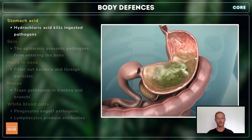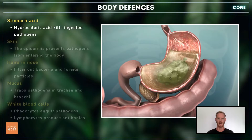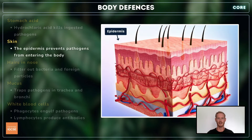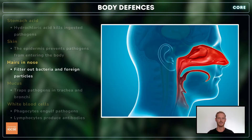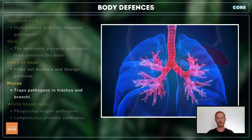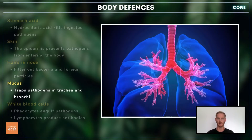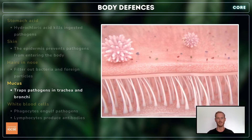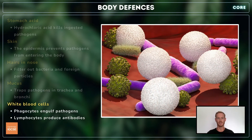Glands in the stomach lining secrete gastric juice containing hydrochloric acid, which kills the majority of any bacteria ingested with food. The outer layer of the skin, called the epidermis, acts as a physical barrier, preventing pathogens from entering the body. The hairs in the nasal passages help to filter out bacteria and foreign particles, while the lining of the trachea and bronchi produces mucus that traps pathogens. The mucus is then carried away from the lungs by ciliated cells in the epithelium. Finally, white blood cells attack pathogens that have found their way into the blood and tissues.